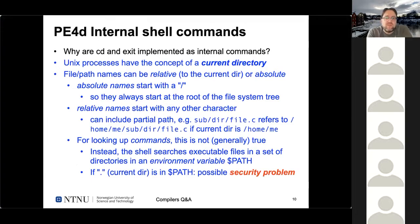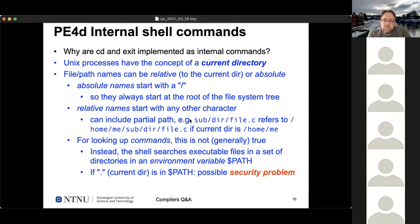The next question concerns implementing internal shell commands: why are cd and exit implemented as internal commands? Every Unix process has the concept of a current directory. Whenever a process accesses a path name that doesn't start with a slash — a relative path name — it's relative to that current directory. So if you enter foo.c, it's assumed to be in the current directory. A partial path like subdir/file.c with current directory /home/me resolves to /home/me/subdir/file.c.